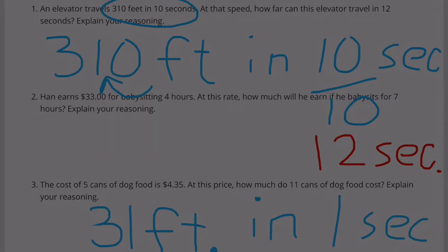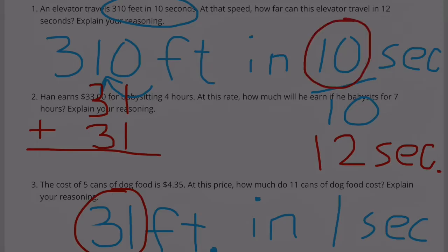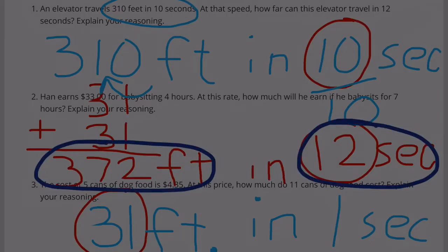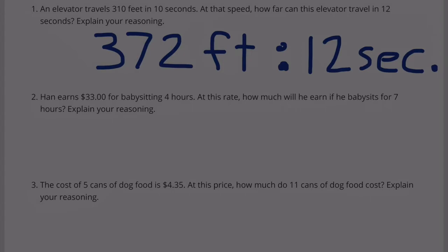So if I want to know how far it can travel in 12 seconds, I can multiply 31 times 12, or I can add 31 seconds twice to 310 feet because 310 feet is how far it goes in 10 seconds, and there's 2 more seconds to make a total of 12 seconds. That's 372. So the elevator can travel 372 feet in 12 seconds.